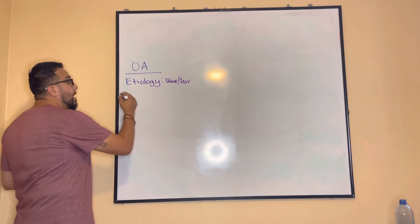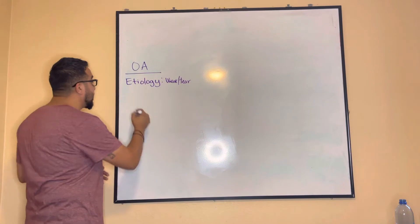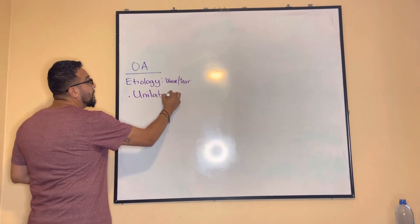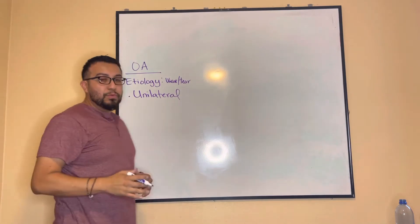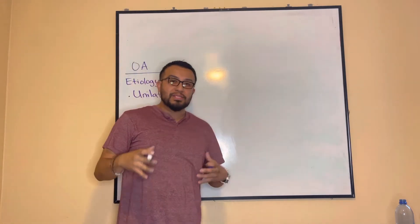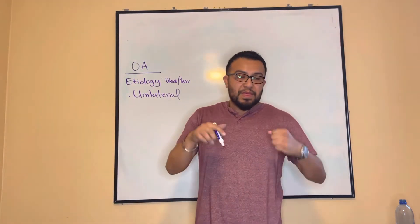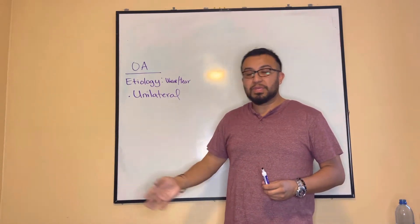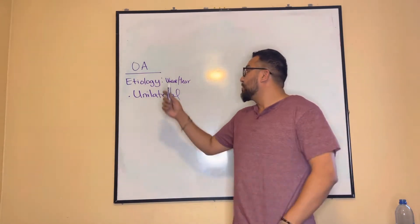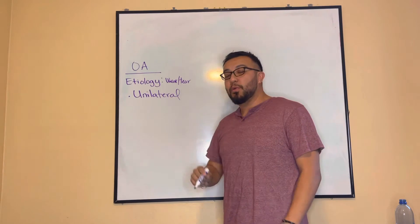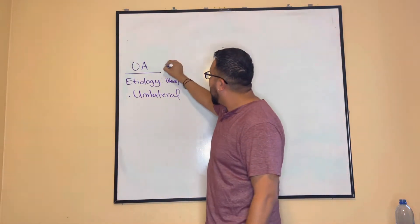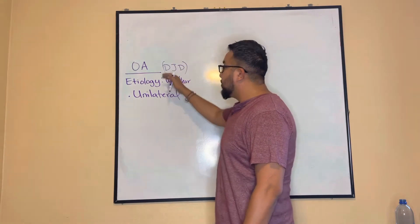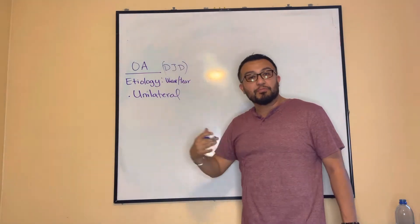Osteoarthritis is a non-systemic, non-inflammatory condition. It's typically unilateral, because if you over-utilize a specific part of your body, that joint is the one that gets broken down. As we age, we have limitations in mobility — that's what we call osteoarthritis, also known as degenerative joint disease, meaning it breaks down over time.